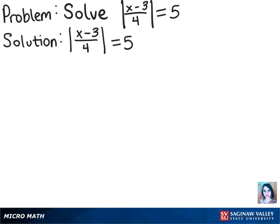All right, so to solve this absolute value equation, we have to think about this a little bit. It's telling us that the absolute value of the fraction x minus 3 over 4 is equal to a positive 5.